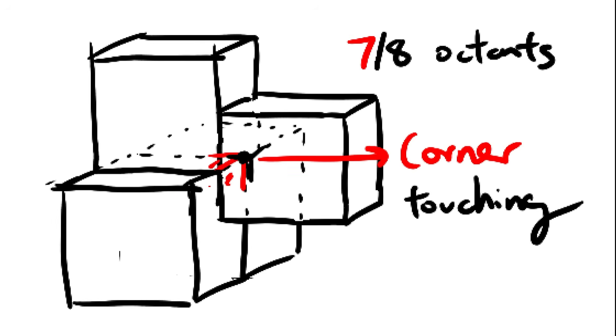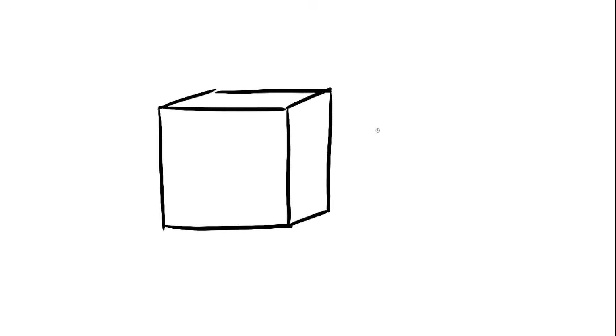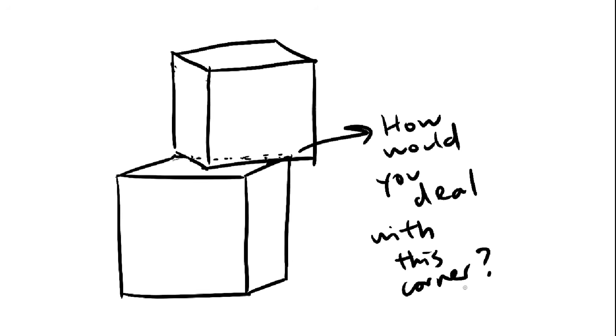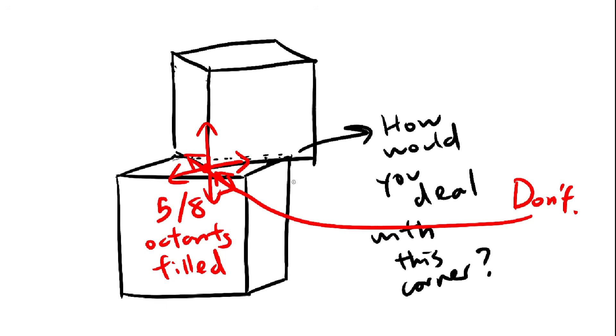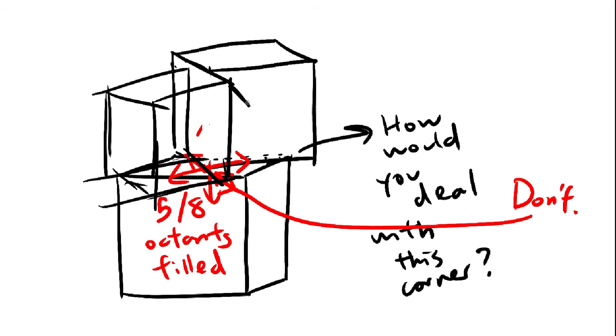But, you may ask, what if our cubes are oriented differently? This proof wouldn't work anymore, would it? Well, we would just shift our focus to this corner instead, and do the exact same thing with the x, y, z axes, and the octants. Here, there are three octants left to be filled, and the only way to fill them all is by using a corner touching cube.